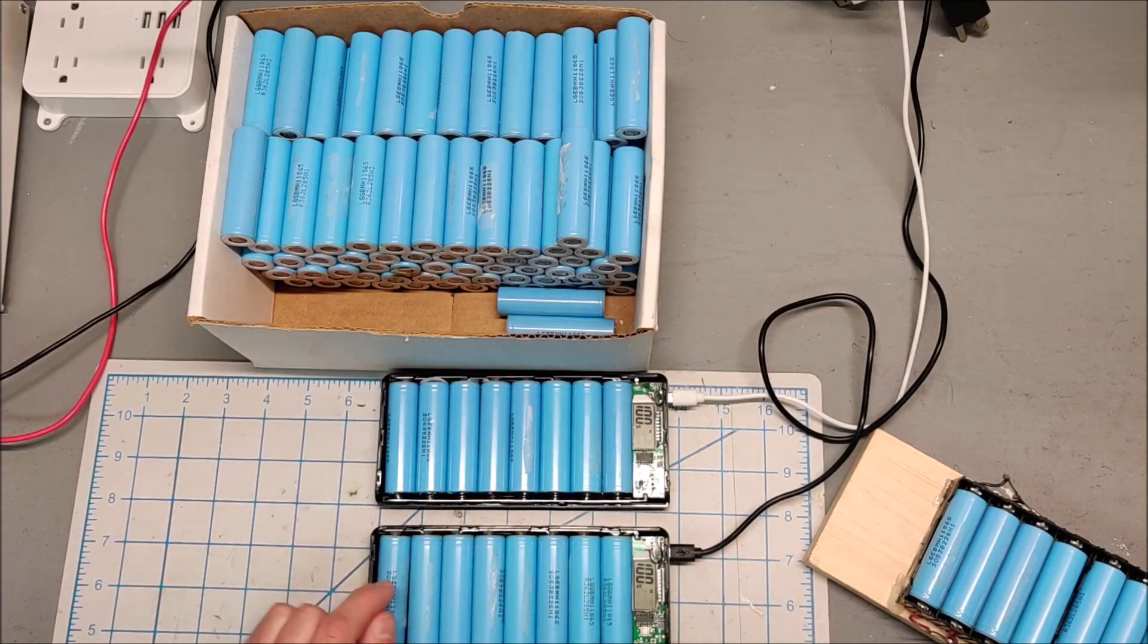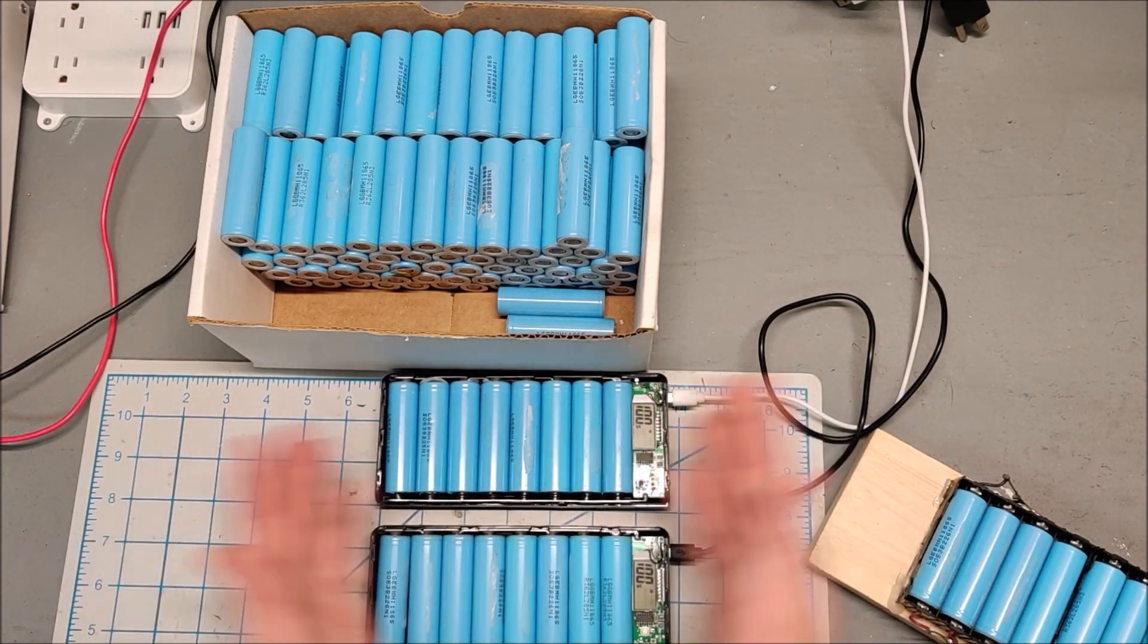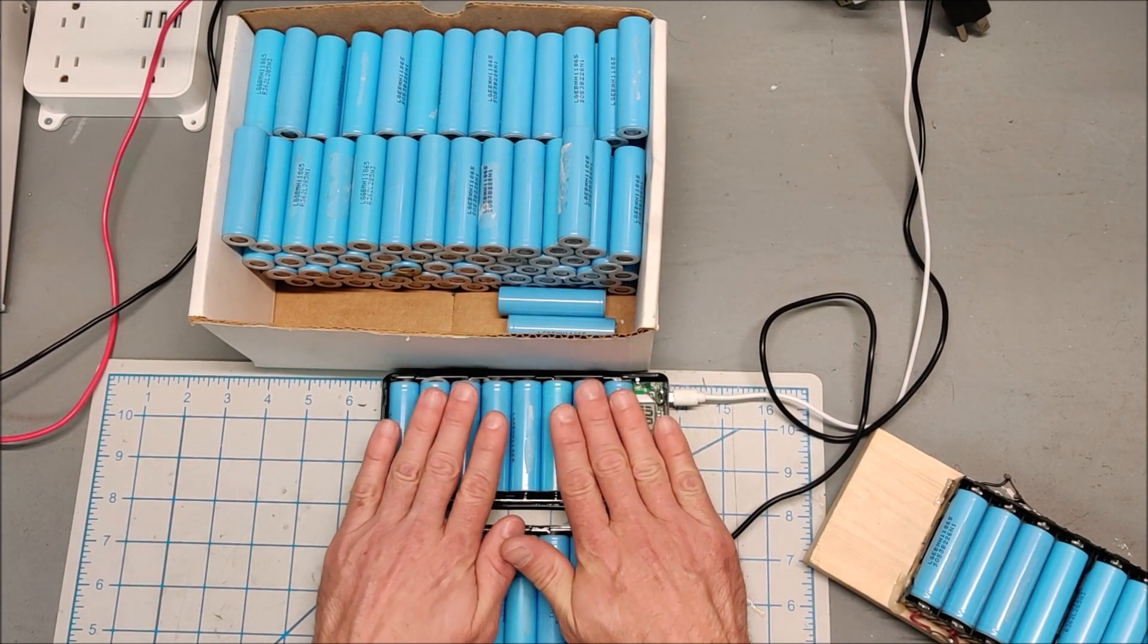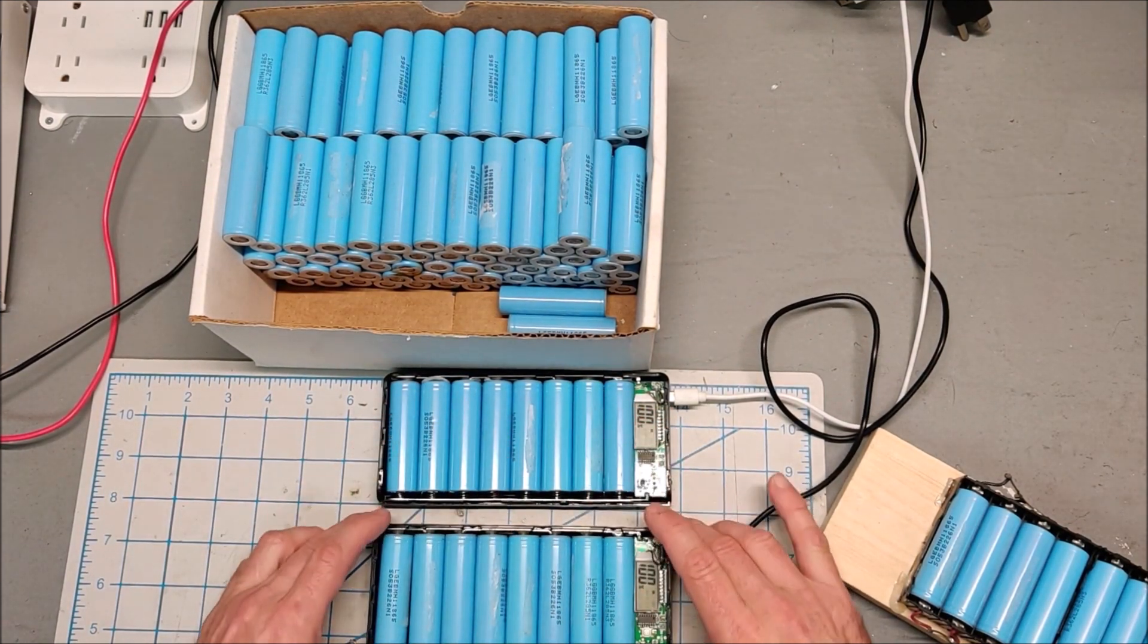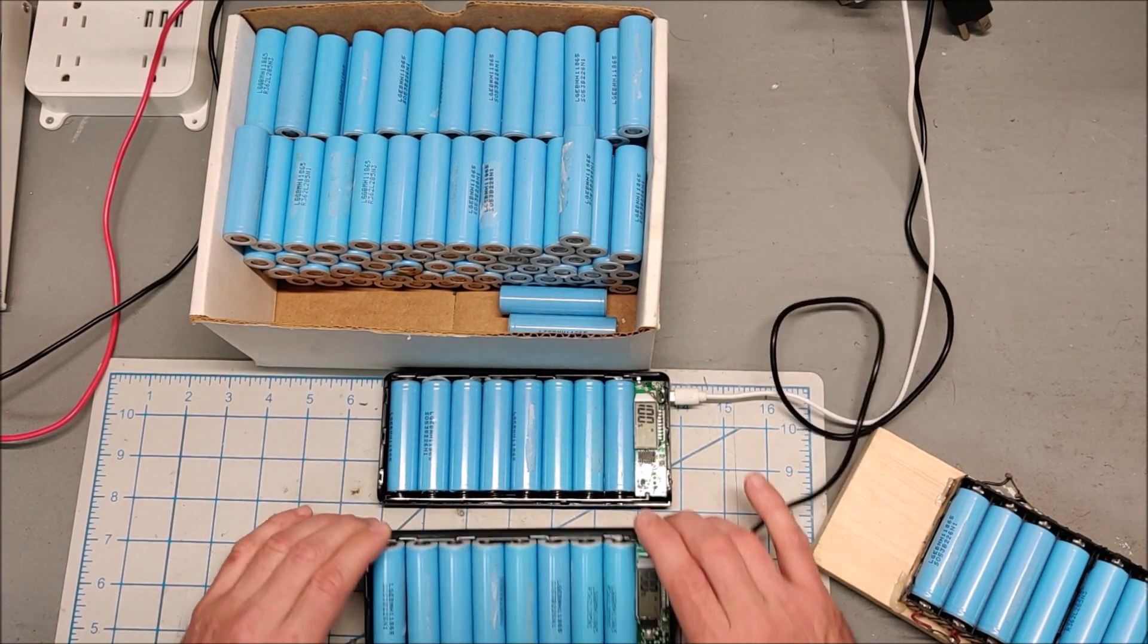This one charges up to 4.19. This one charges up to 4.17. I set them up at night and by the morning they're all charged and done. You can really get through a lot of cells using just some of these USB power banks.